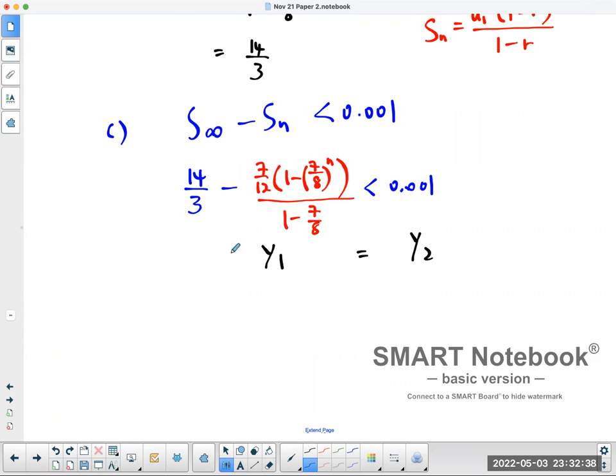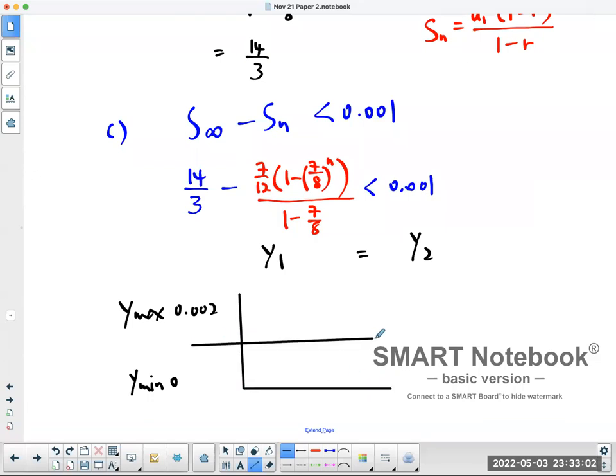Once you have the two graphs, I look at the y₂ and 0.001. I like to make my y min be 0, my y max be 0.002, then 0.001 would be right in the middle of your graph. And it's easy to find the point of intersection that way.